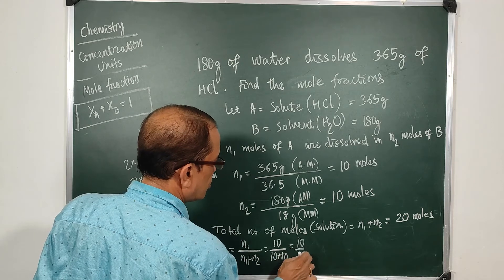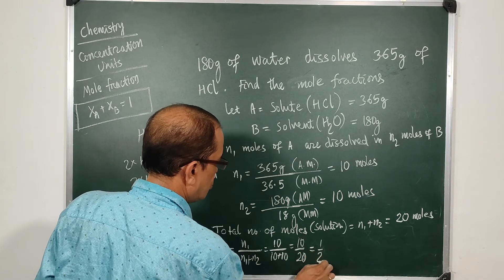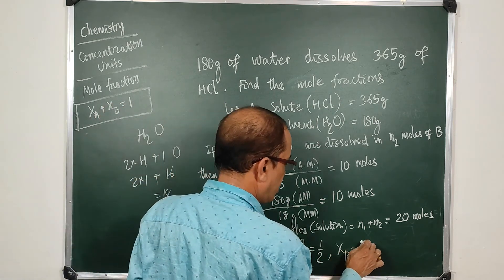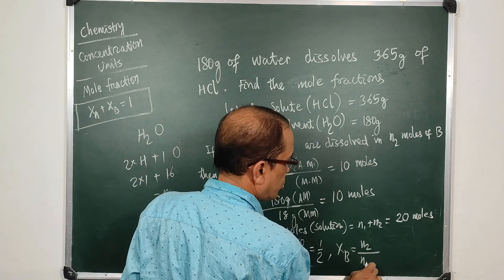by 20, which is 1 by 2. Similarly Xb, the mole fraction of the solvent, will be n2 upon n1 plus n2, which is 10 upon 20, so this is also 1 by 2.